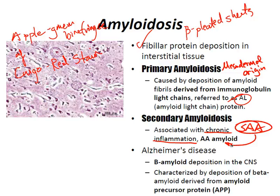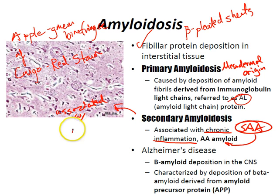Secondary amyloidosis is characteristically a complication of chronic inflammation or infectious disease, such as rheumatoid arthritis, tuberculosis, osteomyelitis, syphilis, familial Mediterranean fever, or leprosy. There's also an association between secondary amyloidosis and neoplasia, such as Hodgkin's lymphoma and hypernephroma, in about 3% to 4% of patients.